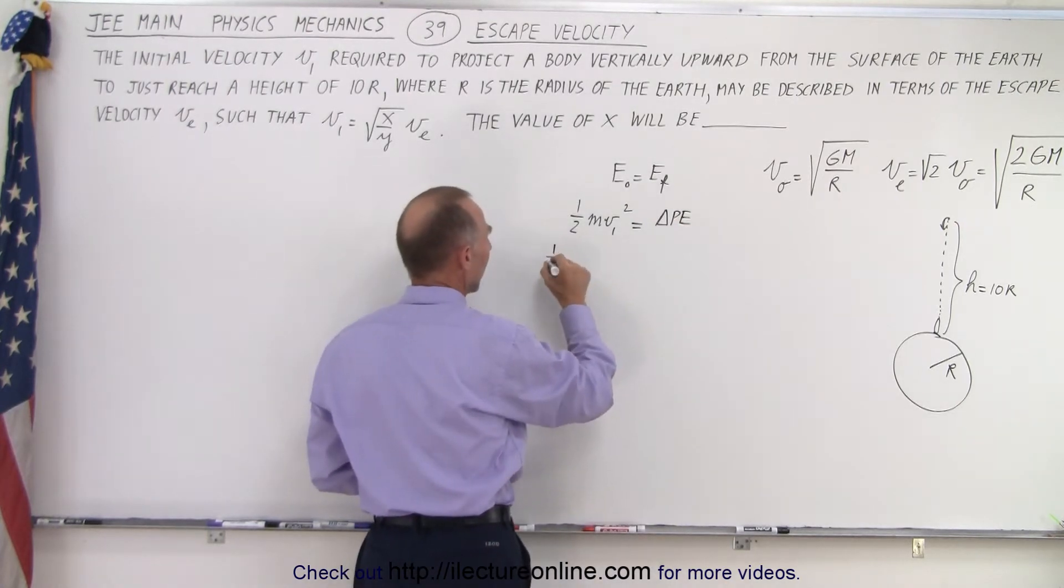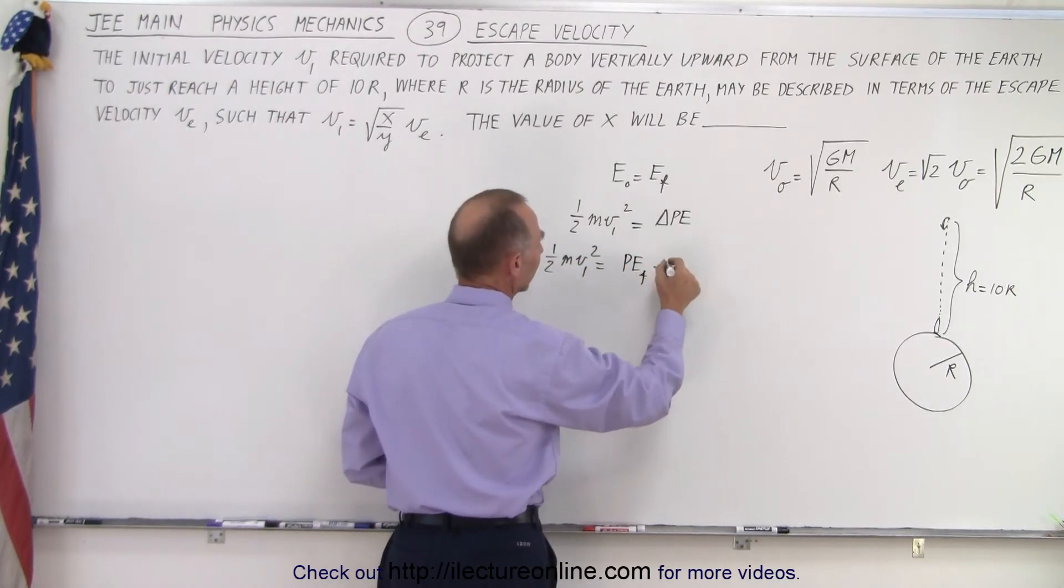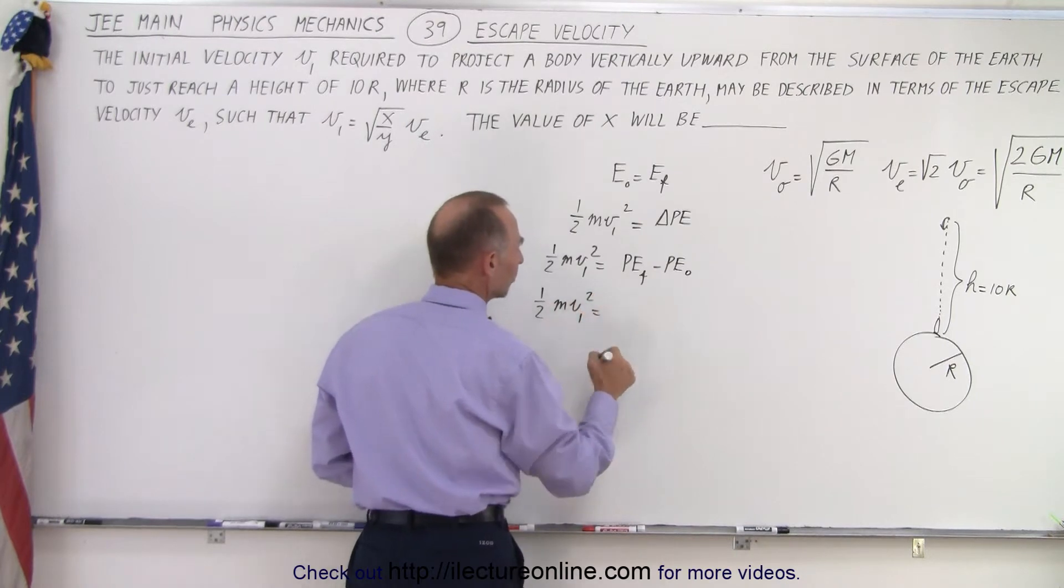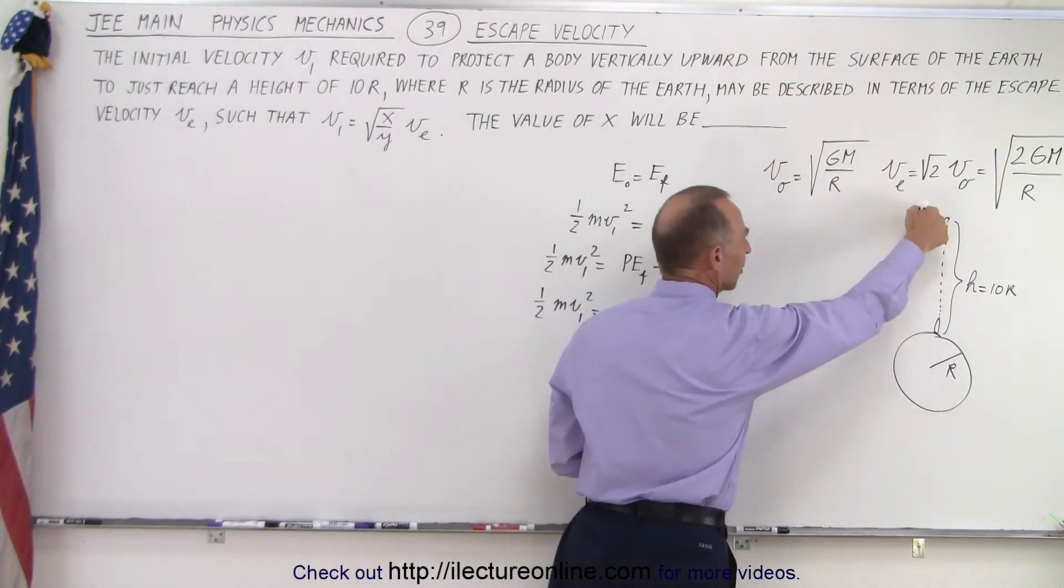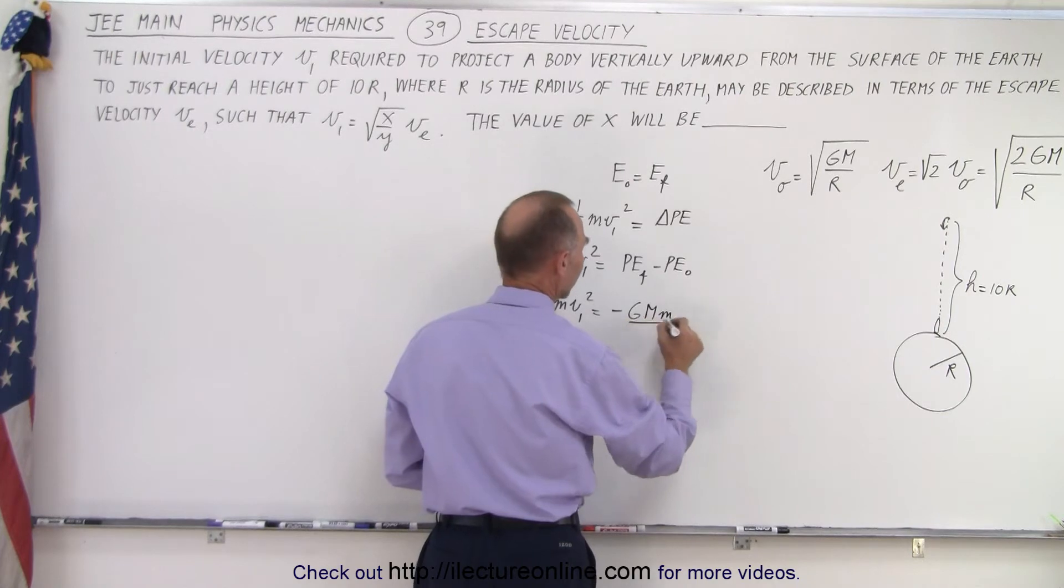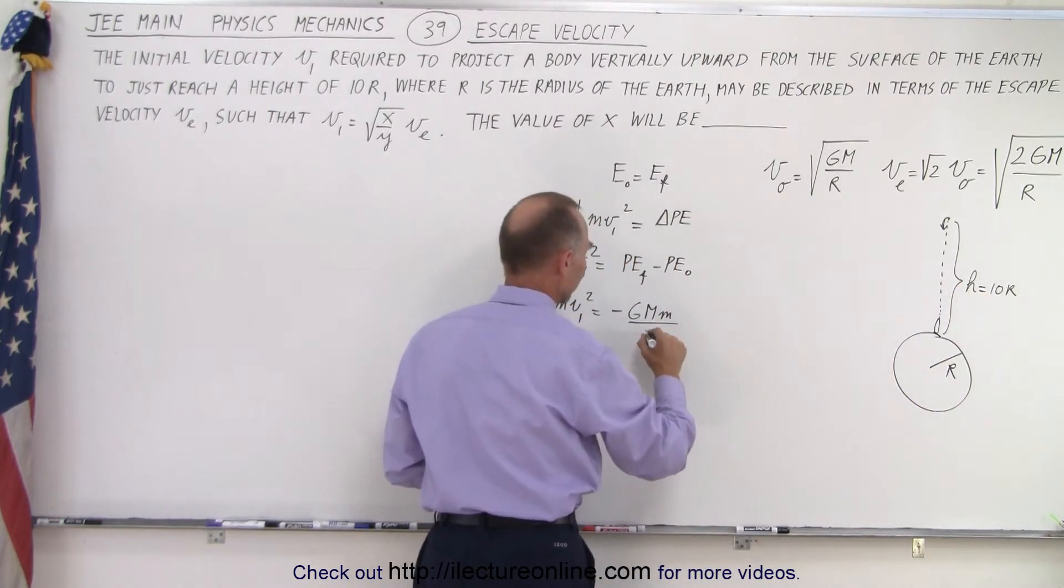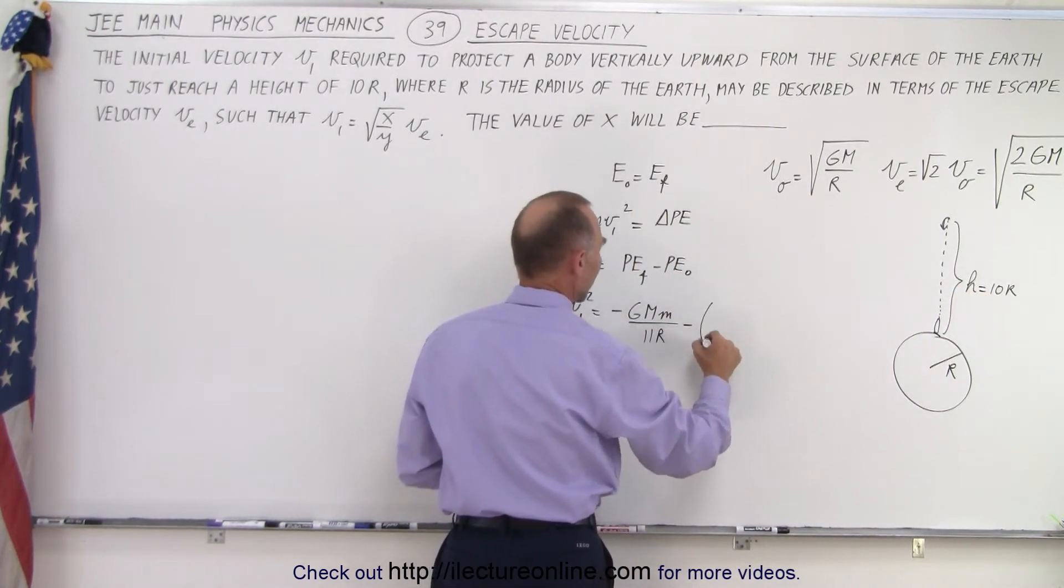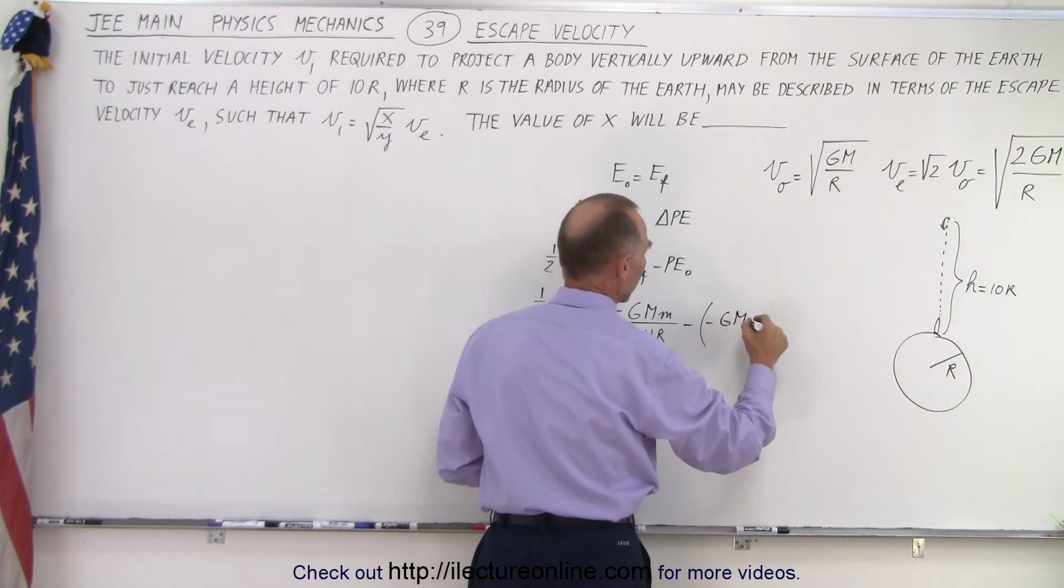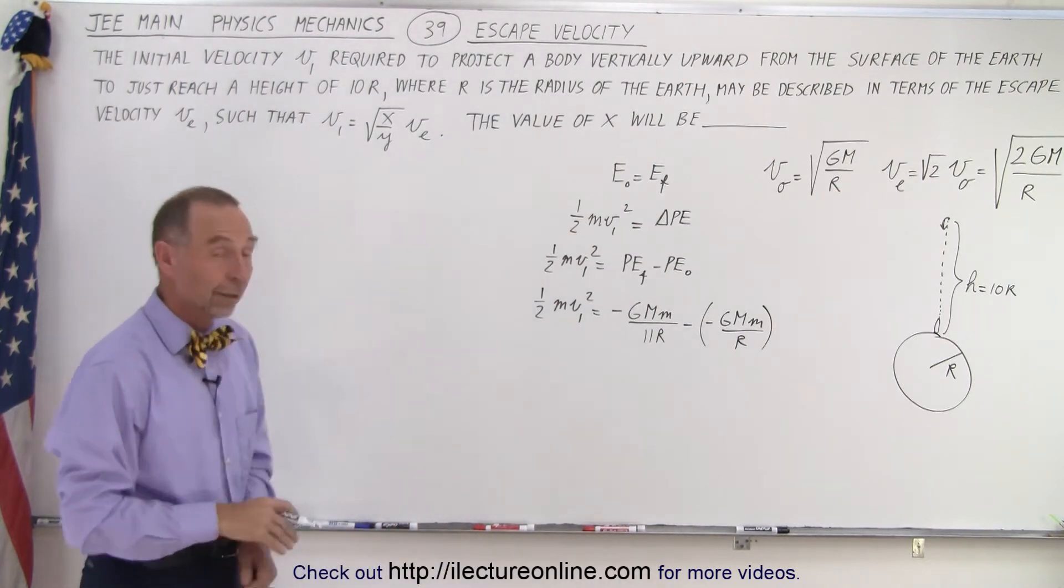This can be written as one-half m v1 squared equals the final potential energy minus potential energy initial. So one-half m v1 squared equals the final potential energy, that's when it reached its maximum height, which would be minus GMm divided by r. Now the radius will be from the center of the earth to its location, that would be 10r plus r or 11r. Then we subtract from that the initial potential energy at the surface of the earth, which is going to be minus GMm divided by a single r.